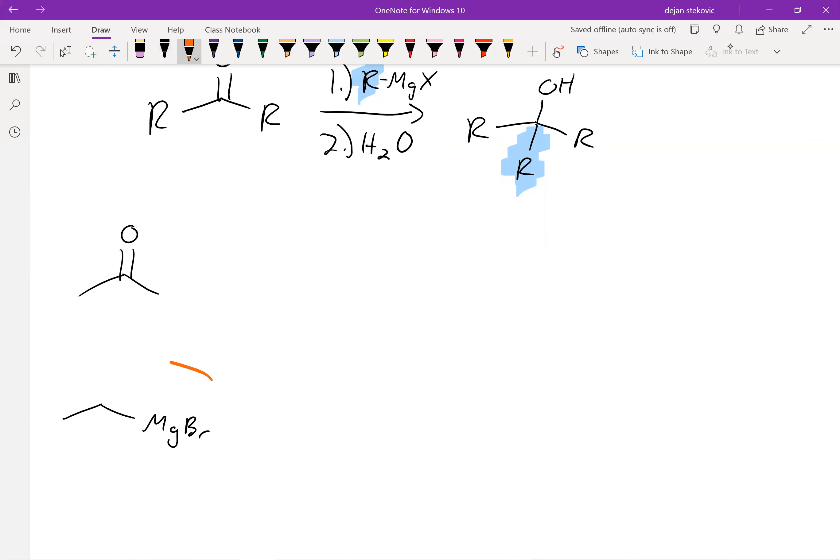So we have our Grignard reagent, which is nucleophilic. We've got our carbonyl, which is electrophilic. And then our nucleophile is simply going to attack our electrophile. We're going to break that carbon-oxygen bond. That way we don't mess with the octet rule.